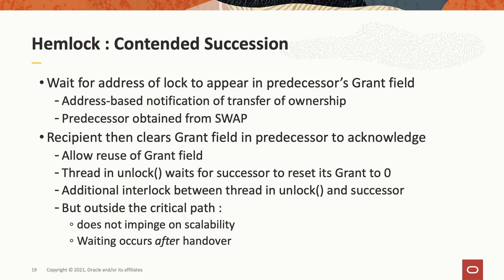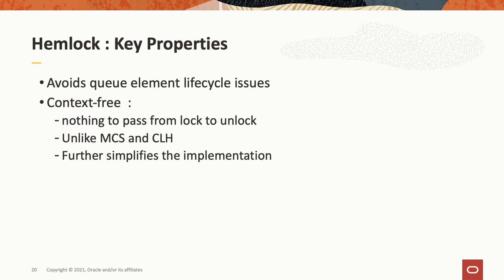When a thread needs to wait for the lock, it busy waits for the address of the lock to appear in its predecessor's grant field. The address of the predecessor was obtained from the atomic swap operation used when the thread enqueued originally. Once a thread has obtained ownership, the recipient then clears the grant field in its predecessor to acknowledge transfer of ownership. This allows reuse of the grant field and allows us to use a single one per thread. Threads in unlock wait for the successor to reset its grant field to zero. This represents an additional interlock outside the critical path and does not impinge on scalability. Hemlock avoids queue element lifecycle issues by virtue of the fact that it doesn't use queue elements, and the API is context-free with no information needing to be passed from lock to unlock.